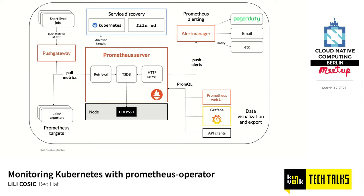Another important thing Prometheus does is evaluate alerting rules and push those alerts to AlertManager. AlertManager takes care of routing these alerts to the correct receivers you configure, but Prometheus does the actual alerting evaluation — something many people don't realize because the AlertManager name is so misleading. The alerting rules are actually stored in Prometheus itself, and Prometheus evaluates them against the data stored in the time series database.